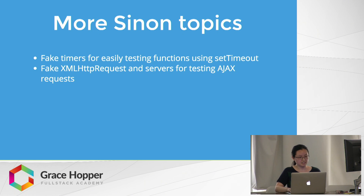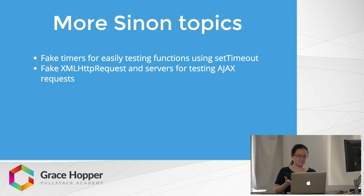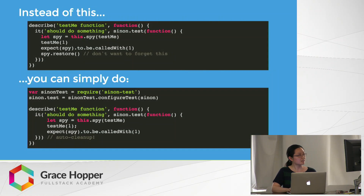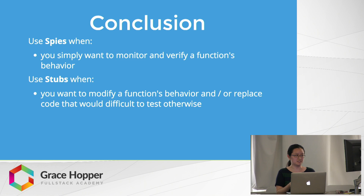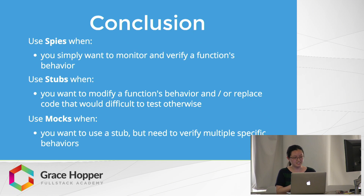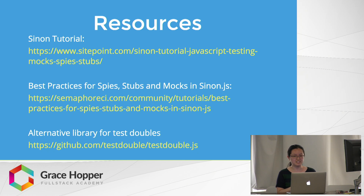In conclusion, there are many more Sinon topics I didn't have time to cover, like fake timers and fake servers for testing AJAX requests. Use spies when you just want to monitor and verify a function's behavior. Use stubs when you want to modify a function's behavior or replace code that would be difficult to test otherwise. Use mocks when you would use a stub but need to verify multiple specific behaviors. There are also resources and an alternative library called testdouble.js for making test doubles.